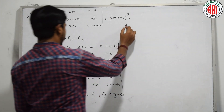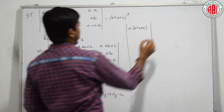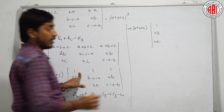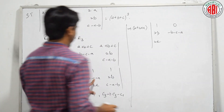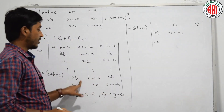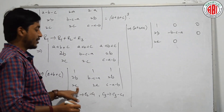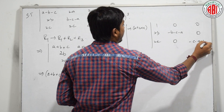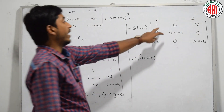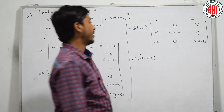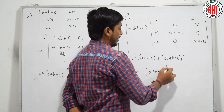C2 tends to C2 minus C1, C3 tends to C3 minus C1. That gives: column 1 as 1, 2B, 2C; column 2 becomes 0, minus B, minus C minus A; column 3 becomes 0, 0, minus C minus A minus B. Applying the determinant expansion: 1 into (minus B)(minus C minus A minus B) minus 0. Taking minus common twice, I will be left with (A plus B plus C)². Therefore my answer is A plus B plus C whole cube.